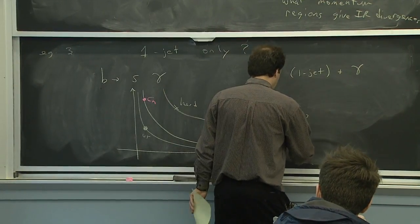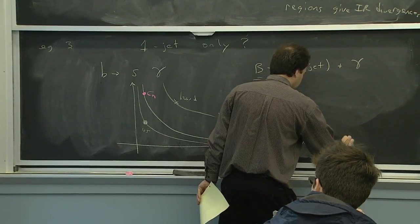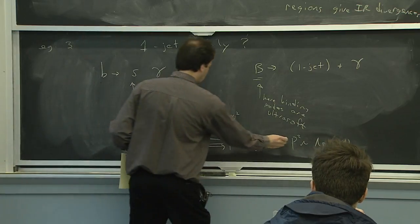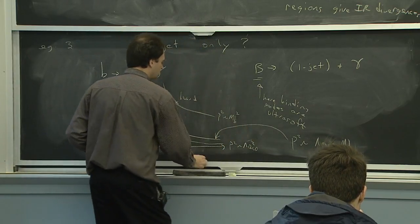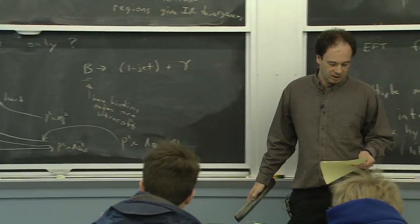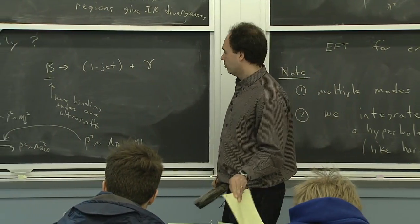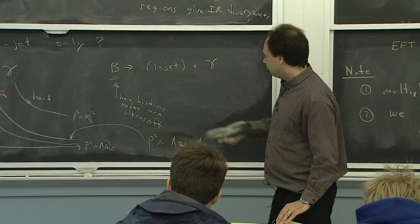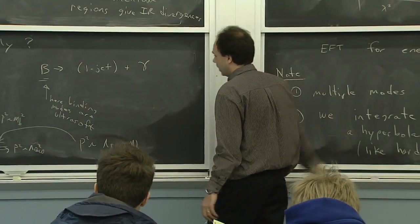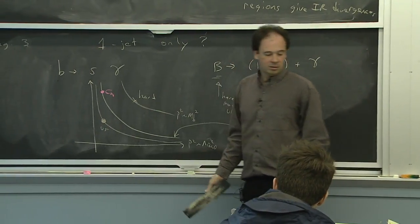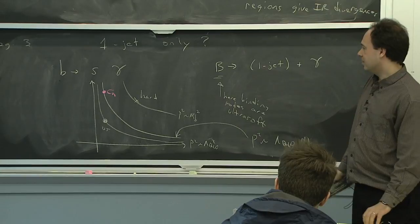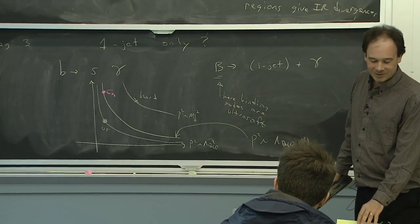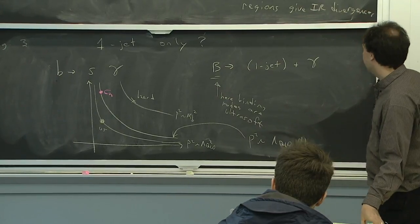In B → sγ, it's natural to take the lowest line as p² ~ lambda_QCD² — those are the soft modes binding the B meson. And then you could figure out what the jets should be: lambda_QCD × m_B, which is in the middle. That's a natural scaling for the B → sγ process. These pictures get more complicated if you try to draw them with three jets, because the plane is no longer enough.